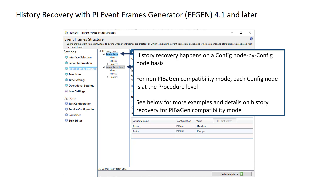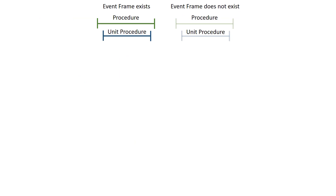In this video, we're going to first go through a discussion of how history recovery happens and then go through a few examples. For our discussion, if the Event Frame is shown in either green or blue at the procedure or unit procedure level, that means the Event Frame exists in AF. If it's shown in the lighter color, that means the Event Frame does not exist in AF, but there is underlying trigger data that corresponds to that Event Frame.